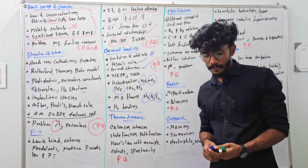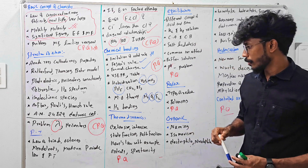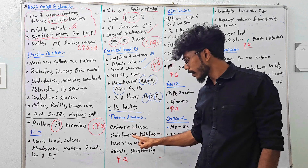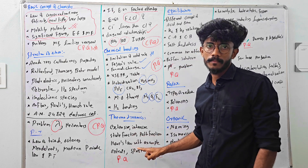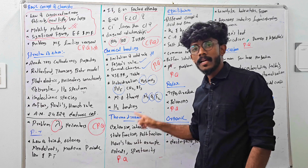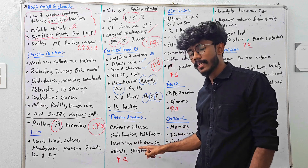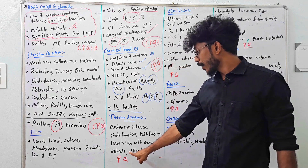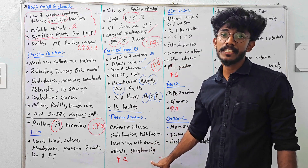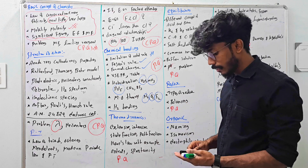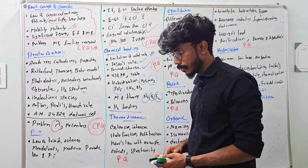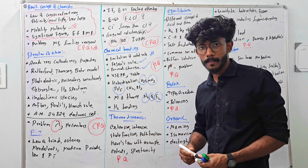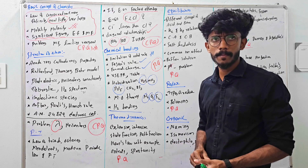In the next chapter, I will try to explain extensive and intensive properties, state function and path function. Let's study the exam. In Hess's law, let's study the definition. Let's study the entropy criteria for spontaneity. Let's study the first law of thermodynamics and its mathematical expression.